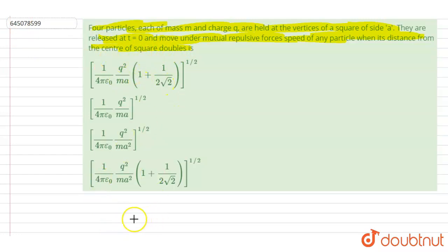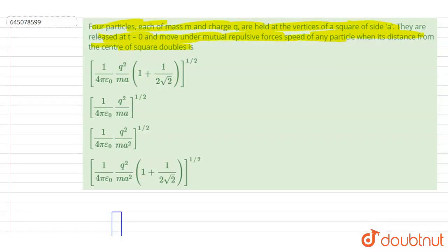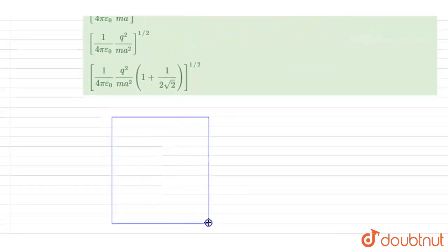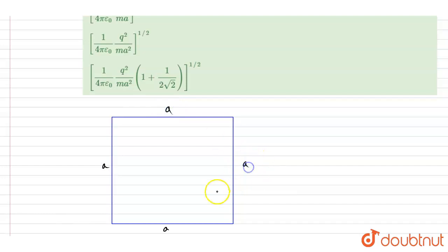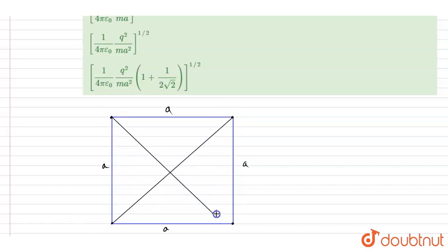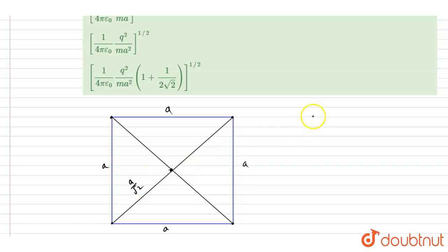We want the distance of each particle from the center to be doubled. Initially, each particle is at a vertex of the square with side length a. The distance from the center to a vertex is a divided by root 2. We want this value to double.